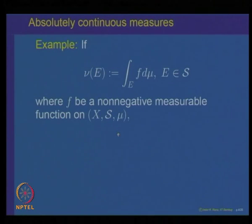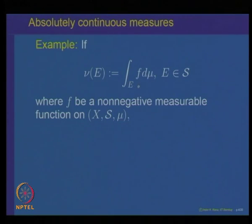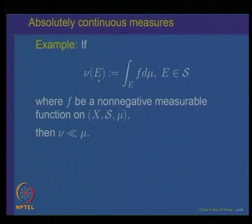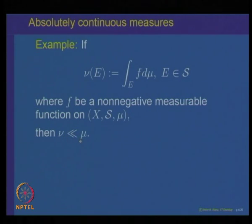We looked at an example of absolutely continuous measures. Take a non-negative measurable function f on a measure space (X, S, mu) and integrate this function over a set E in the sigma algebra. With f and mu fixed and E varying, this integral defines a number nu of E. We had shown when defining the integral for non-negative functions that nu of E is a measure, and if mu of E equals 0 then nu of E equals 0. So this measure nu, defined via the integral of f over E, is absolutely continuous with respect to mu.